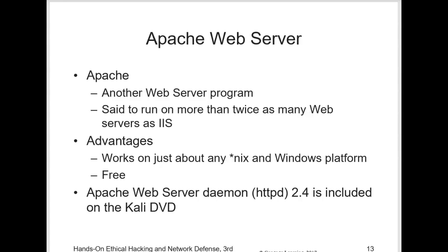The web server uses ASP scripting language to generate HTML pages for the web browser. To prevent potential security problems, Microsoft does not want users to be able to view an ASP website's source code. The Apache web server is said to run on more than twice as many web servers as IIS. Apache works on just about any of the Unix or Linux platforms, as well as Windows, and it's free. You'll run across Apache server systems when conducting a security test. Apache is a sophisticated, automated, modular web server.